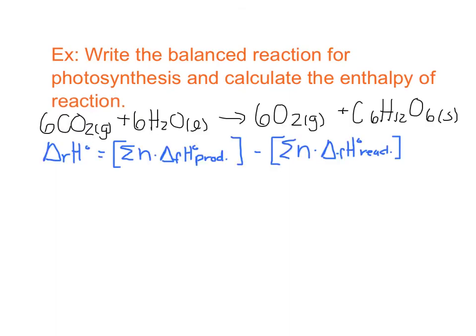I've written out my balanced equation for photosynthesis, where we have 6CO2 and water as a liquid, making oxygen and glucose. Remember that it takes water to make a plant grow, clearly in its liquid form. I also took the time to write out our equation that we're going to use. Let's start with the products. The sum of the moles, which is always the number in front of the balanced compound, times its own molar enthalpy of formation.